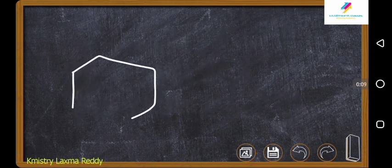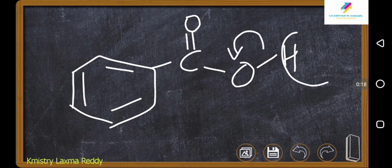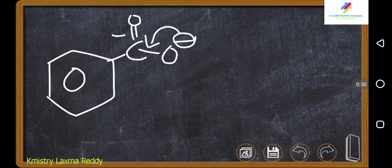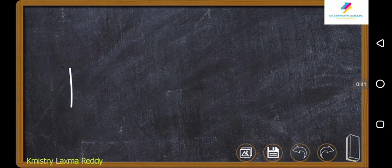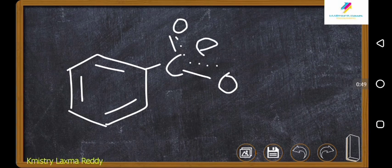As we know, benzoic acid means benzene with C double bond O OH. If this proton goes, oxygen will be getting negative charge. So the structure will be C double bond O and O minus. If this is participating in resonance, the resonance structure will be O minus, now this is double bond O. The interesting thing is, the resonance hybrid you can write like C-O with overall negative charge.